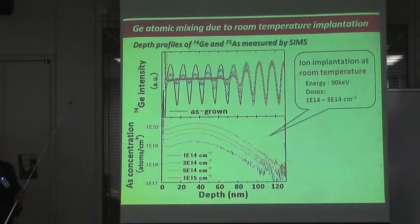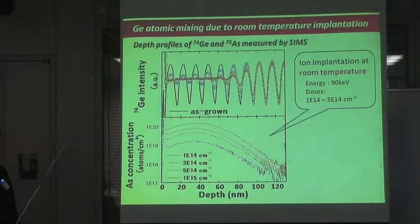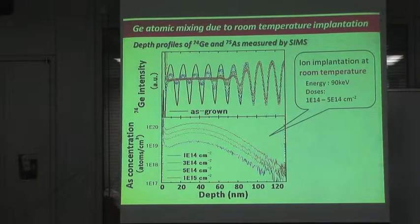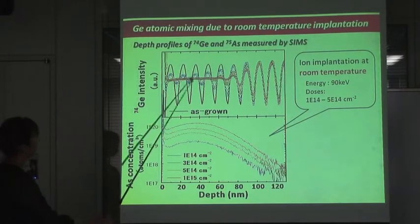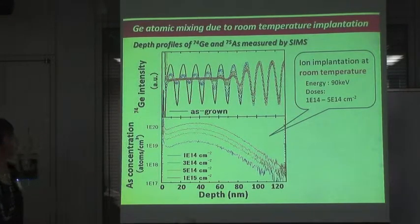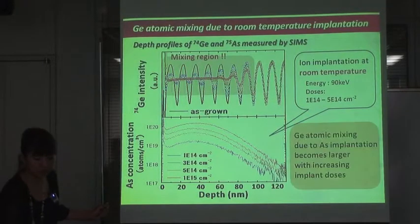Here I show Germanium atomic mixing due to room temperature implantation. These figures show the depth profiles of 74Ge and 75As measured by SIMS before and after arsenic implantation. The upper figure shows 74Ge intensity as a function of depth, and the lower figure shows arsenic concentration with the same depth scale. The black line is the profile of the 1×10^14 sample before arsenic implantation.